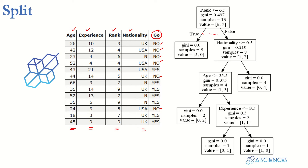In this case the data is already categorical — the age, experience, rank, and nationality values are all categorical. For nationality, let's say UK maps to 1, USA to 2, and N to 3, converting all string data to numeric. Now let's look at the decision tree on the right. In the very beginning we have 13 samples in total.